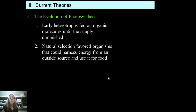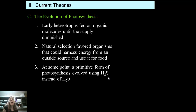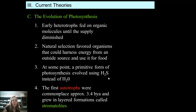As the food source began to run out for these heterotrophs, evolution was favoring cells that could make their own food through the process of photosynthesis. A primitive form of photosynthesis began to evolve, but instead of using water, these primitive cells were using hydrogen sulfide. That process is known as chemosynthesis, and it still happens at those deep sea floor vents. The first autotrophs were commonplace by about 3.4 billion years ago.